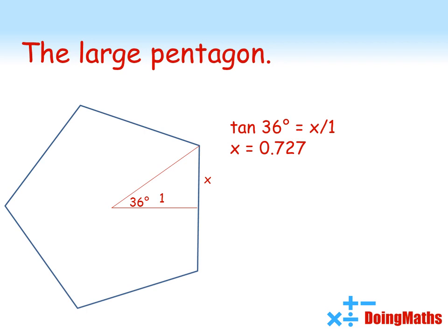Now the area of a right angle triangle is half times base times height. So the area of this triangle will be a half times x. We can do 10 of them inside the pentagon. So the area of the pentagon must be 10 times a half times 1 times 0.727, giving us an area of 3.633.